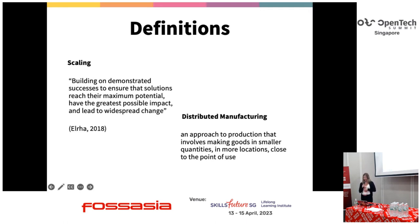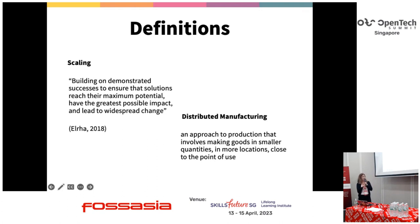This is a more human-friendly approach to scaling, I think. With that, I'd like to come to distributed manufacturing. Distributed manufacturing is an approach to production that involves making goods in smaller quantities, in more locations, and closer to the point of use. Most of the literature on scaling and distributed manufacturing finds that this approach — being closer to the user — is actually a challenge, which should not come as a surprise, because distributed manufacturing is understood as a small practice.